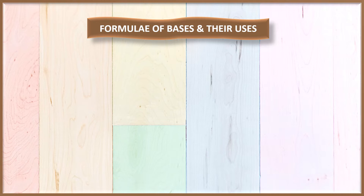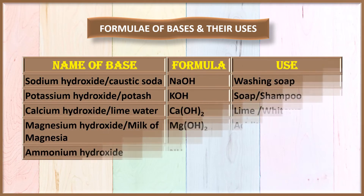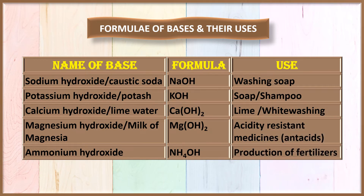The formula of bases and their uses: Sodium hydroxide is also called caustic soda, with molecular formula NaOH, and it is used in washing soap. Potassium hydroxide has formula KOH. Calcium hydroxide, or lime water, Ca(OH)2, is used as lime or for white washing. Magnesium hydroxide, or milk of magnesia, Mg(OH)2, is used as antacids or acidity-resistant medicines. Ammonium hydroxide, NH4OH, is used for the production of fertilizers.